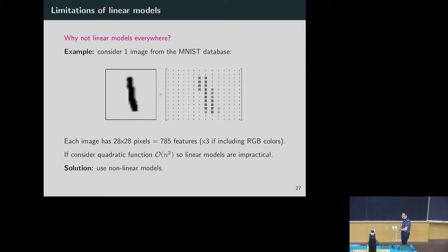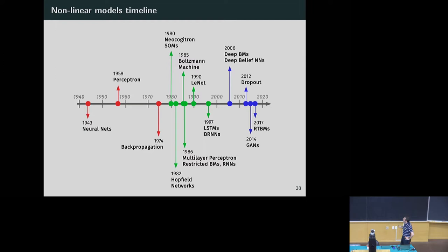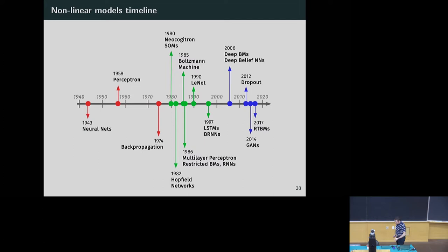Historically, the evolution of nonlinear models started in 1943 with the first paper on neural networks. There were theoretical papers until 1974 with backpropagation — the technique to train neural networks. After backpropagation, people started creating models: Boltzmann machines, multilayer perceptrons, recurrent neural networks, LSTMs. In the last decade, we got the deep models — people started using more and more parameters and managed to train systems without the issues we discussed before.